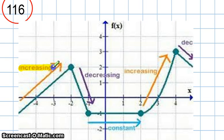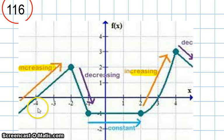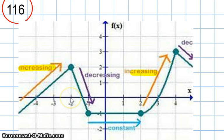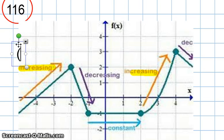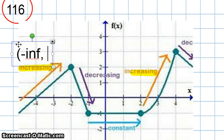We can see it's increasing in these two areas. We say that a function is increasing on an interval when we identify the x values for which the function values are increasing. So in this case, this interval looks like it's going all the way from negative infinity up to negative 2 is when it's increasing. So we call this interval open parenthesis for negative infinity, and it actually stops increasing at negative 2.